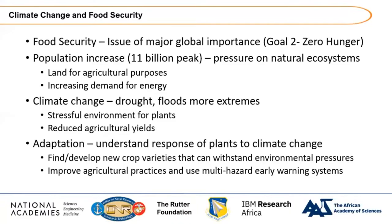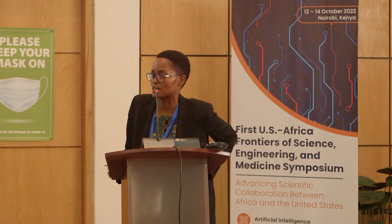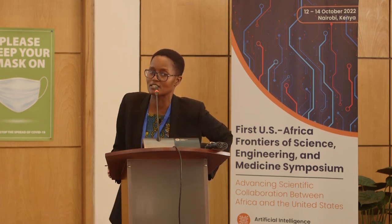In terms of the challenges we are dealing with regarding food security, we know that Sustainable Development Goal 2 is on zero hunger. When you combine the question of increasing population with the fact that more land is being used for housing and malls, that reduces the land available for agricultural purposes. You are also increasing demand for energy, and we know that climate change is happening.